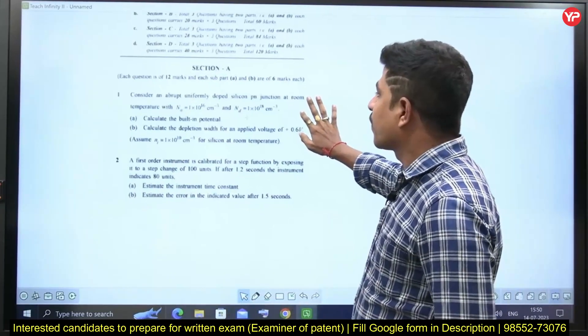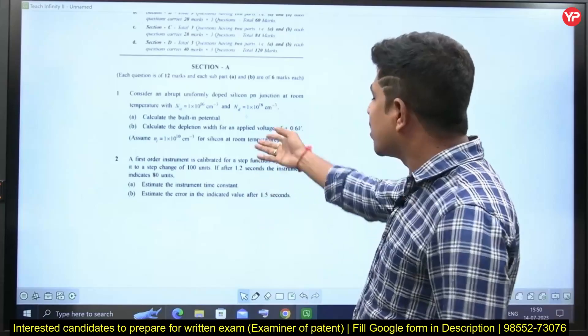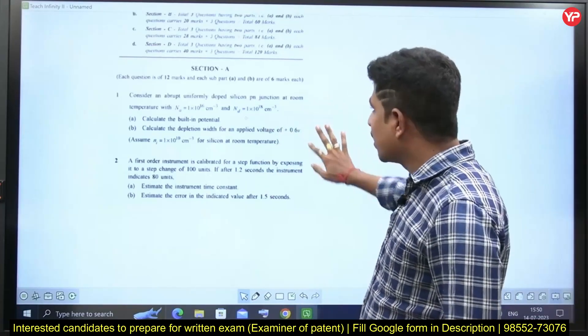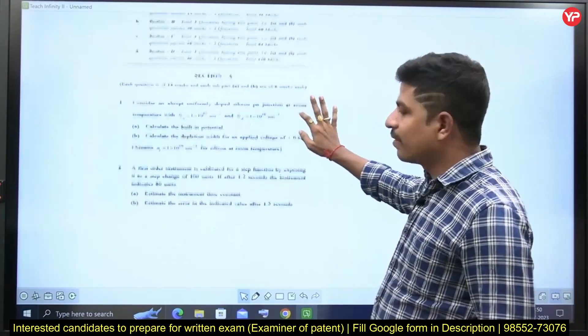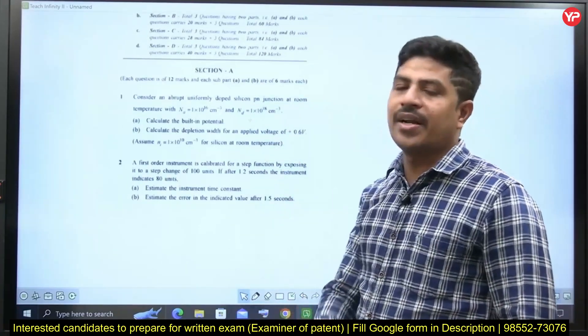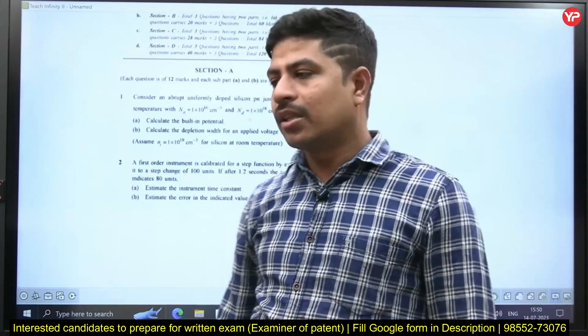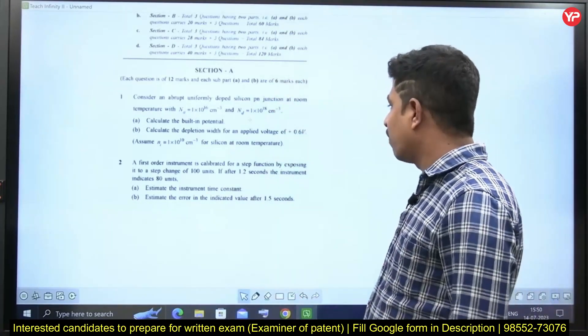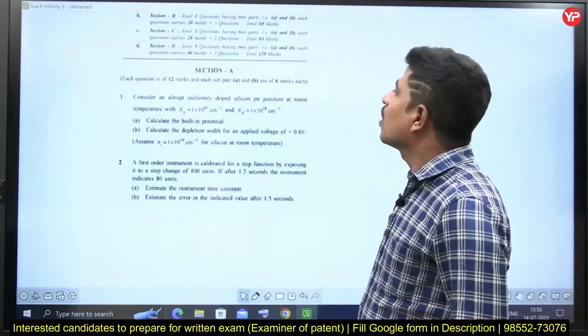Observe here. Section A. This is a sample question from a previous year paper — it is from 2018. Last time CGPDTM was conducted in 2018. This is the 2018 Electrical Engineering paper.